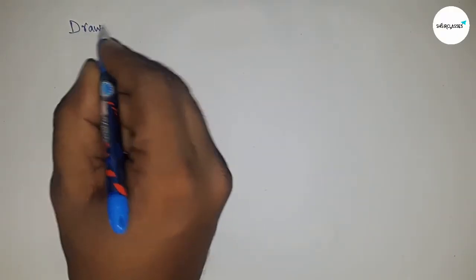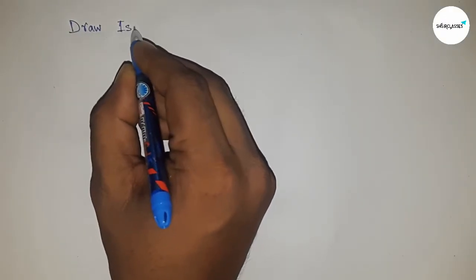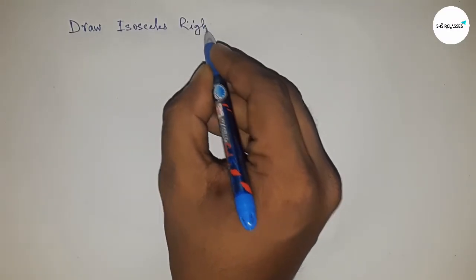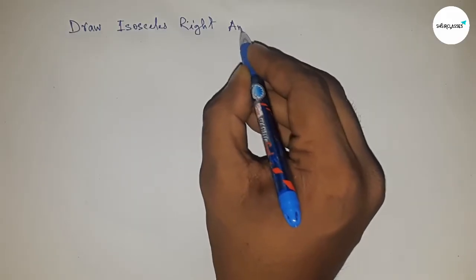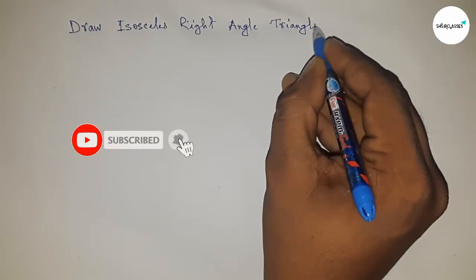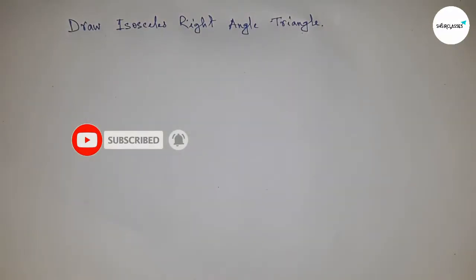Hello student, welcome to SSR classes. Today talking about the construction of an isosceles right angle triangle by using compass. So before starting the video please subscribe channel and press the bell icon for future video notification.